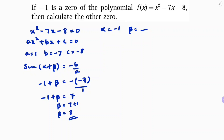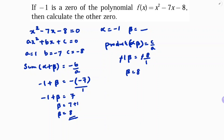You can also use the product of zeros: α × β = c/a. Here α = -1, so minus 1 × β = -8/1. The negatives cancel, so β = 8. The other zero is confirmed as 8.